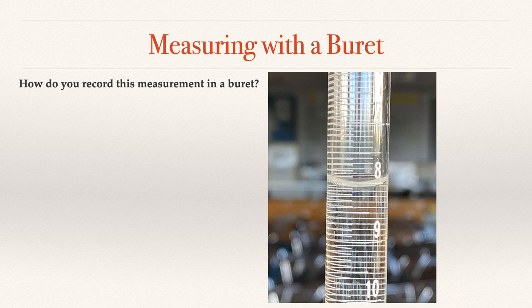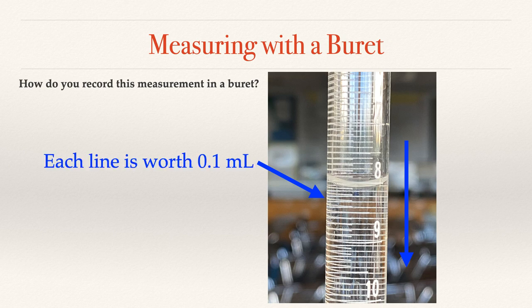Last one, how do we record this measurement in the burette? Well, what you want to notice is that the numbers are going down. So we have eight, we have nine and 10 as we go from top to bottom. So that's sort of the direction that we're going to be reading it. And then what we want to be able to look at is how much are each of these graduations worth. And since we're on the metric system, this sort of works in the same way. We have 10 graduations or divisions between each of the numbers. So that means that each line is worth a tenth of a millimeter. And that's the last value that we know.